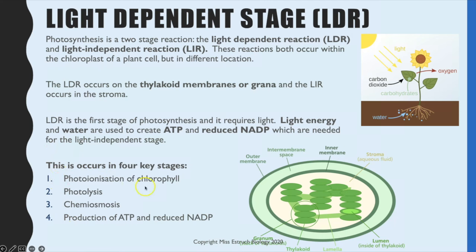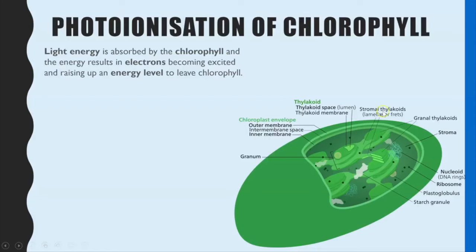The key reactions that happen here are: first, photoionization of chlorophyll, where the chlorophyll absorbs light energy and photoionization occurs. The light energy absorbed by the chlorophyll is also then used for the photolysis of water. From those two stages, chemiosmosis can occur, which ultimately results in the production of ATP and reduced NADP.